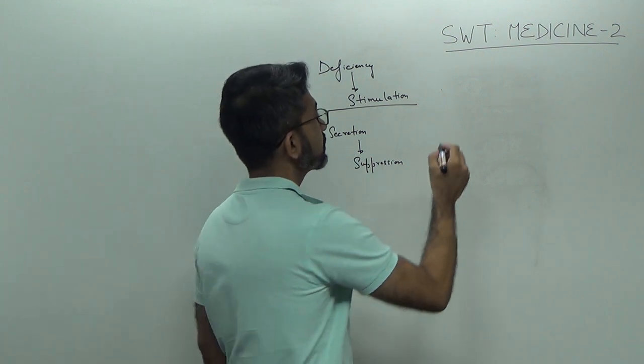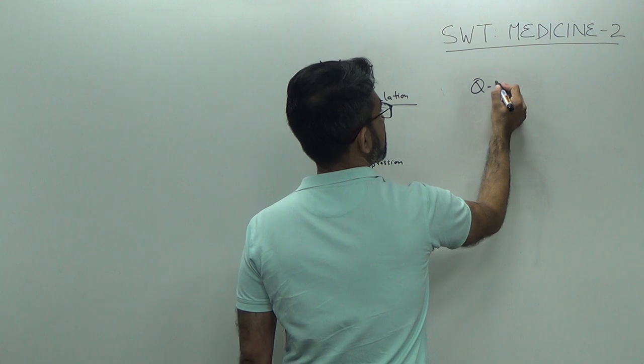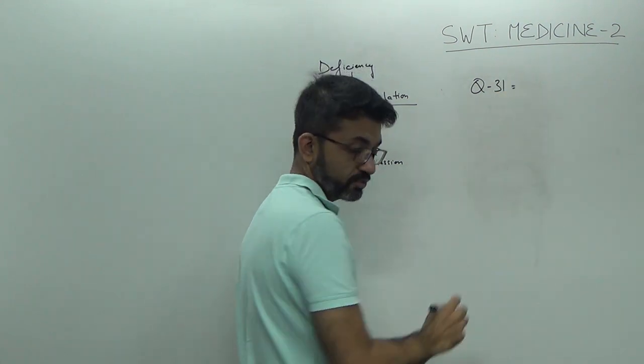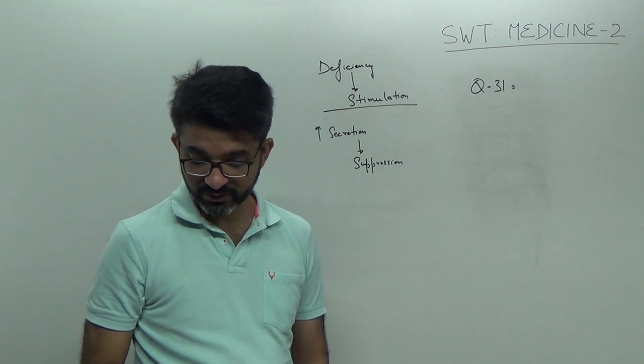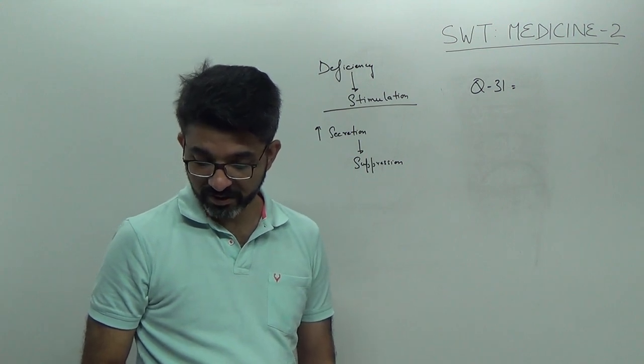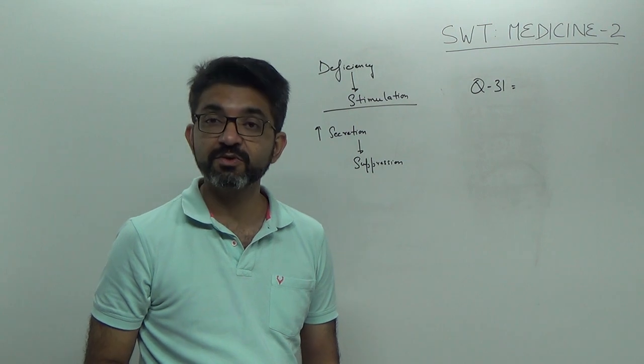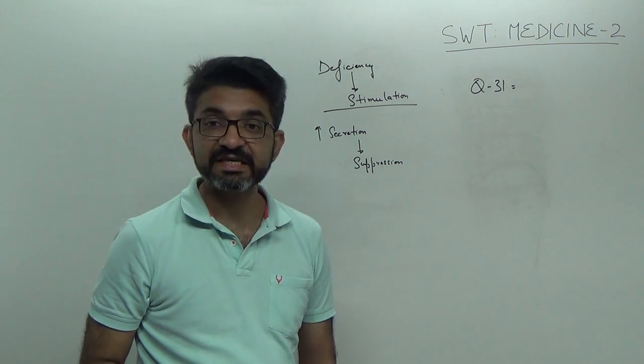Octreotide. Question number 31. Octreotide is not useful in, see, octreotide can be used, it's a drug of choice for insulinoma, it is used in carcinoid, it is used in glucagonoma. Right. So, answer is D. Glioma.